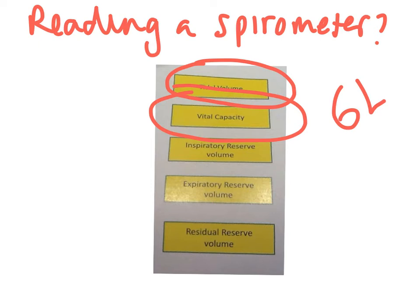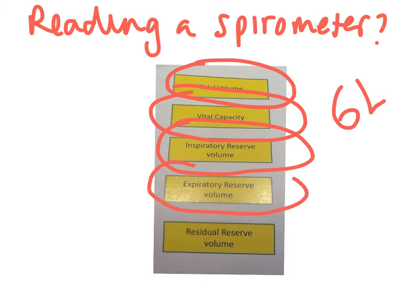Inspiratory reserve volume is the extra bit of breath you are able to inhale beyond your tidal volume. So if you're breathing in normally, there's still some reserve there for you to continue inhaling. Expiratory reserve volume is, after your tidal volume breath out, the extra bit of air you are able to push out as a reserve. Those cover four of the key terms.